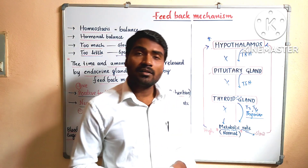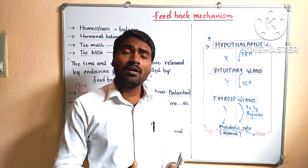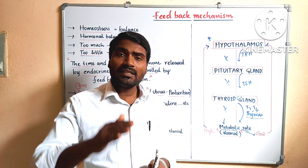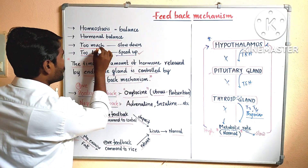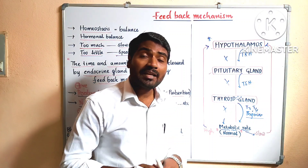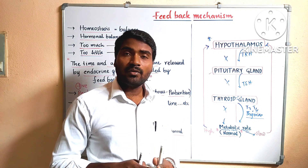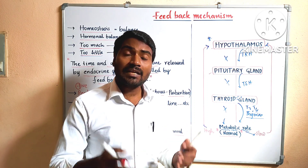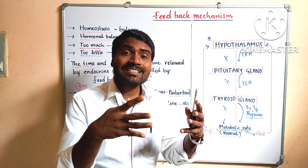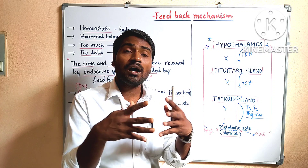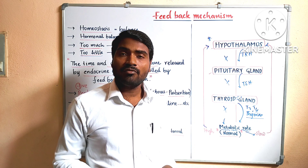Likewise, not only sugar but any function caused by hormones — if it is very little, it will speed up the reaction; if it is too much, it slows down the reaction. Who is maintaining this feedback mechanism? The hypothalamus and the endocrine system. The endocrine glands regulate themselves with the help of the nervous system. The nervous system and endocrine system work in a coordinated fashion. That is called feedback mechanism.